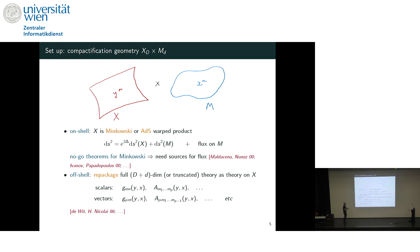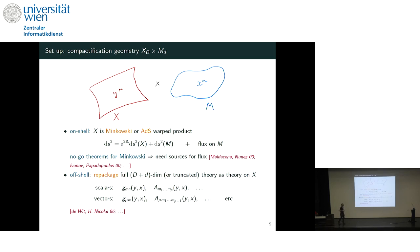We're always going to be thinking about some compactification, so there's some space with an external space X and an internal space M. Sometimes I'll be on-shell, meaning I satisfy the equations of motion of the supergravity, and then X will either be a Minkowski or an AdS space, with fluxes on the internal space. There are famous no-go theorems in the case of Minkowski that these fluxes have to have sources. I'll also have an off-shell formulation sometimes — you could take the whole higher-dimensional theory and reformulate it as a theory in the external space, giving an infinite number of scalar and vector fields.